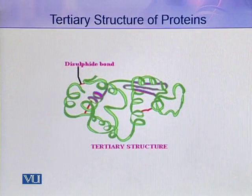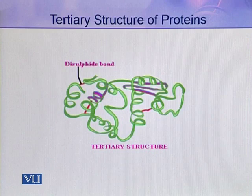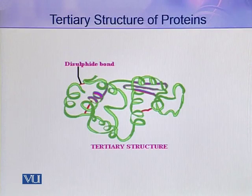Here you can see a single polypeptide chain that has assumed the tertiary structure by folding back and forth, and it assumes a fully functional three-dimensional structure. In this structure you can easily see the disulfide bonds that have been formed between the different amino acids of the same polypeptide chain.